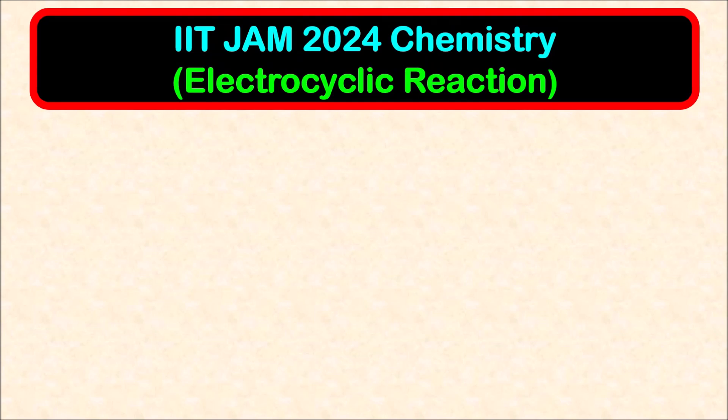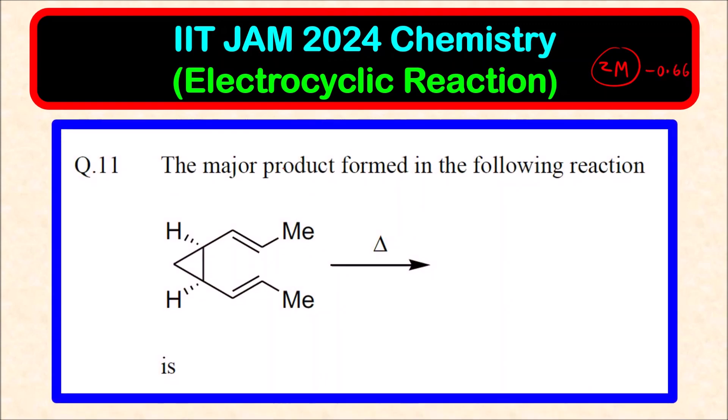Question 11, that is we will start with part B where each question is of 2 marks and there is negative marking of 0.66. This is the question: The major product formed in the following reaction is.